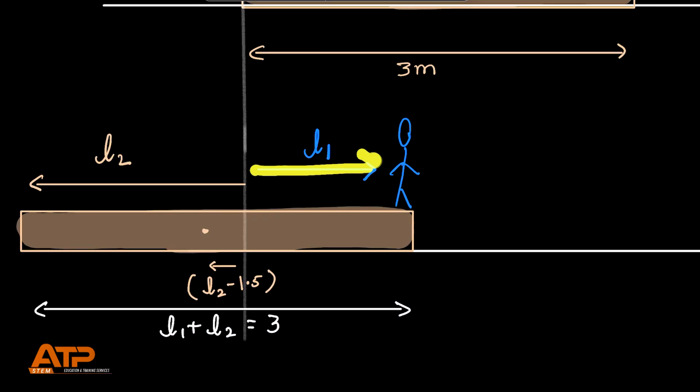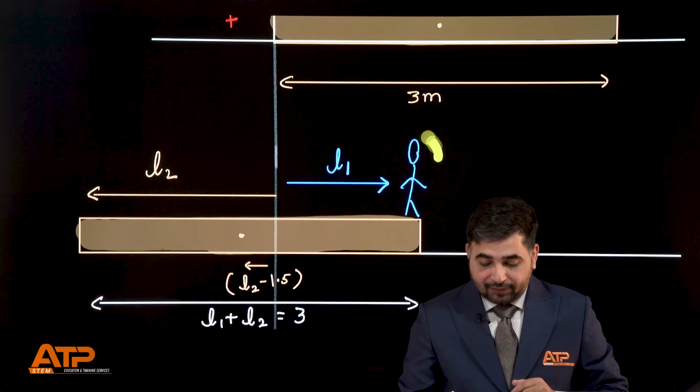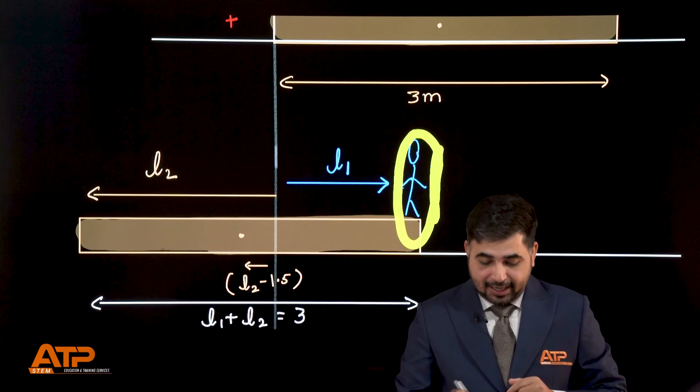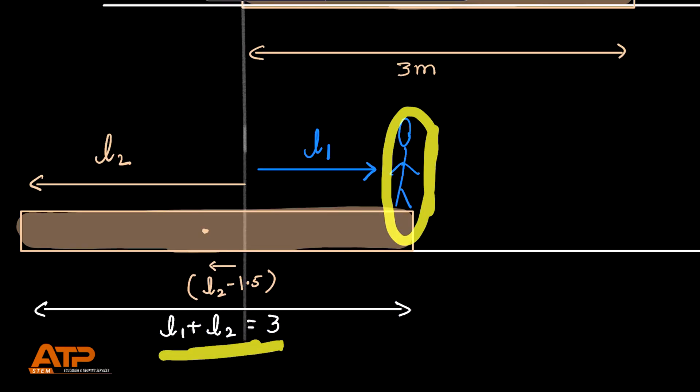When the person is going to walk, when the person moves by L1 distance to the right and the left end of the plank moves L2 distance to the left, in order for the person to reach the other end, L1 plus L2 has to be 3.